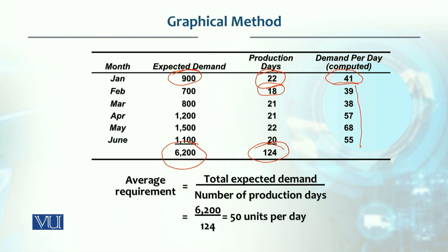If we do level production — meaning the same production every month — we need to determine the daily production rate. For that, the total expected demand for 6 periods is 6200, divided by the total days available for production which is 124, giving us 50 units per day.